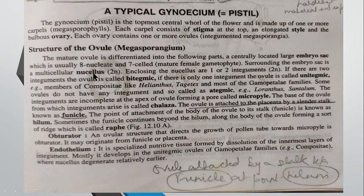If the number of integuments is one, we will say it is a unitegmic ovule. If the number of integuments is two, we will say it is a bitegmic ovule. And sometimes the condition is also ategmic when no integument is present.